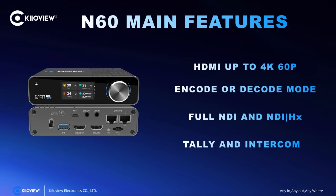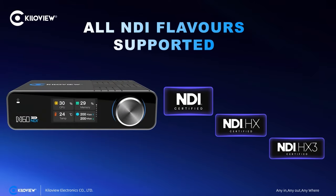Let's have a look at the N60 main features. This encoder is the flagship HDMI 4K 60p encoder from Kilovue. It can be used as encoder or decoder — that's why we call it an IOModule. It has both full NDI and NDI-HX capability to encode and decode, and also includes Tally and Intercom in the same box. It now supports all NDI flavors: full NDI, NDI-HX, and the new NDI-HX3, which offers better image quality with lower latency than the previous NDI-HX2 codec.